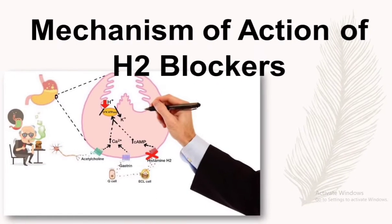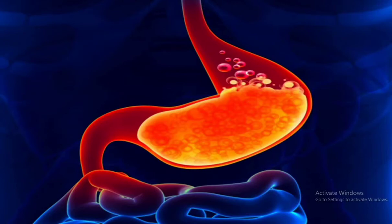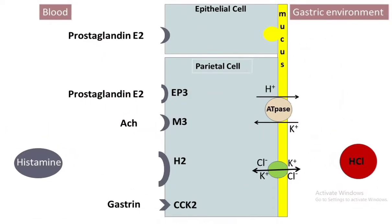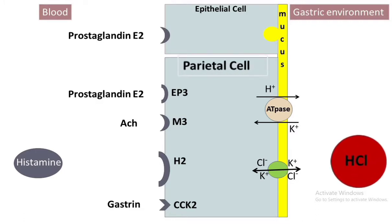Let's learn the mechanism of action of H2 blockers. The pH of the human stomach lumen remains acidic, but because of the presence of mucus, the wall of the lumen remains unharmed by acid. The presence of epithelial cells and parietal cells in the gastric wall makes this possible. The parietal cells of the stomach secrete hydrochloric acid, whereas epithelial cells secrete cytoprotective mucus and bicarbonate to protect the gastric wall.